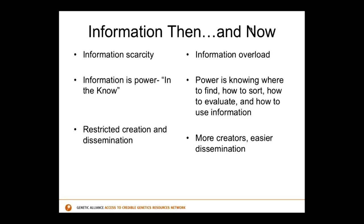The last point is about restricted creation and dissemination of information, which relates to that information scarcity. Before the computer and internet age, the dissemination of information was much more limited. Now almost anyone can publish something — you can make a website, you can blog, and there are even cheaper ways to disseminate pamphlets and things like that than there were before.